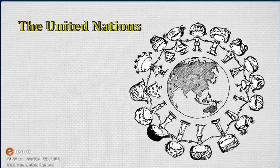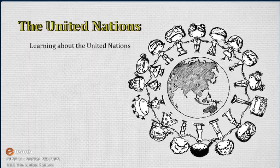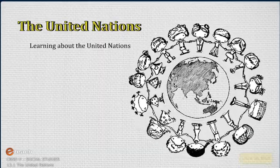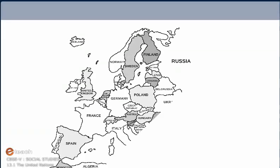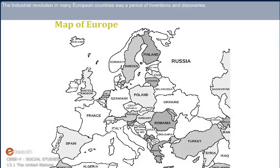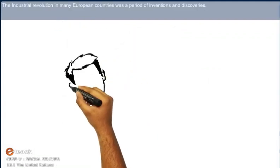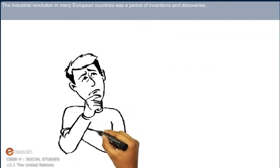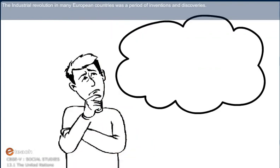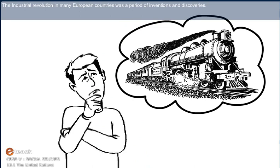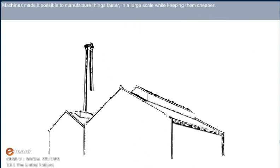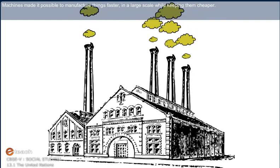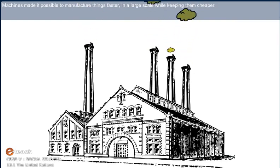Learning about the United Nations. The Industrial Revolution in many European countries was a period of inventions and discoveries. Machines made it possible to manufacture things faster on a large scale while keeping them cheaper.